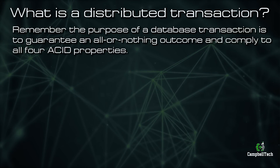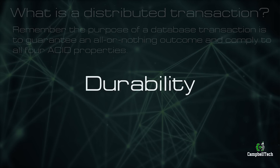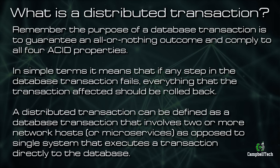Remember, the purpose of a database transaction is to guarantee an all-or-nothing outcome and comply to all four ACID properties — that is, atomicity, consistency, isolation, and durability. In simple terms, it means that if any step in the database transaction fails, everything that the database transaction affected should be rolled back. A distributed transaction can be defined as a database transaction that involves two or more network hosts, or microservices in our case, as opposed to a single system that executes a transaction directly to the database.